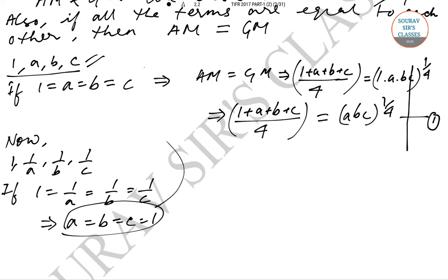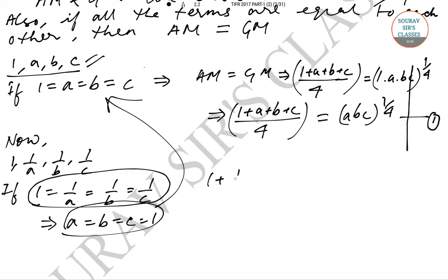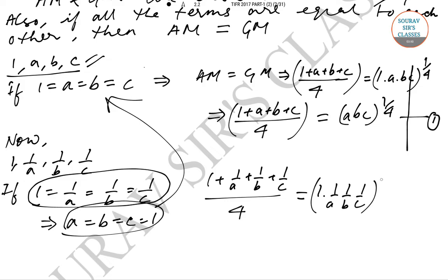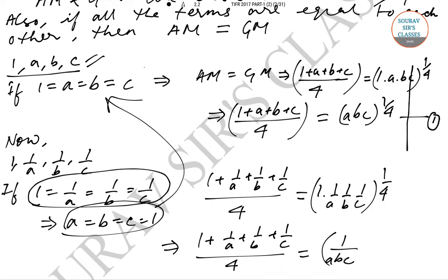We use this set of conditions to find the AM and GM. The AM is (1 + 1/a + 1/b + 1/c) / 4, and that equals (1 · (1/a) · (1/b) · (1/c))^(1/4). So (1 + 1/a + 1/b + 1/c) / 4 = (1/abc)^(1/4). We take this as equation 2.